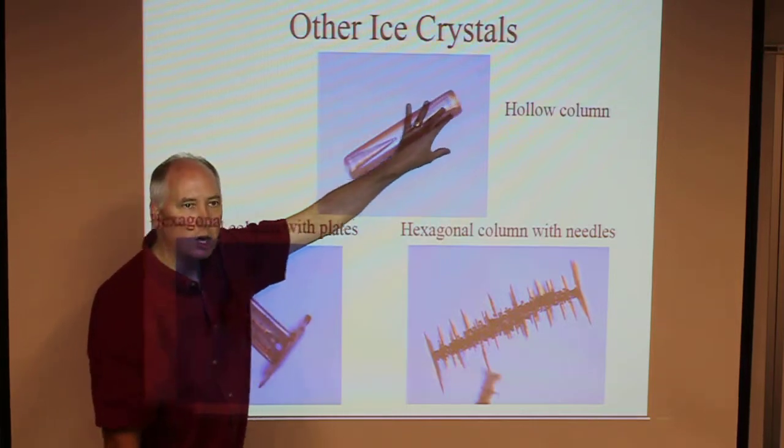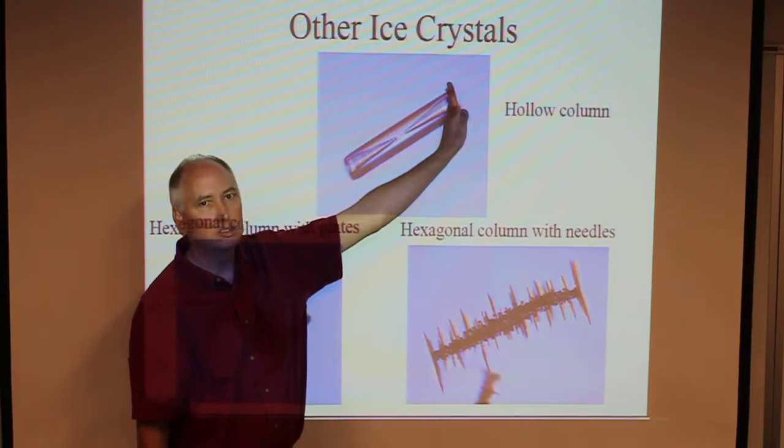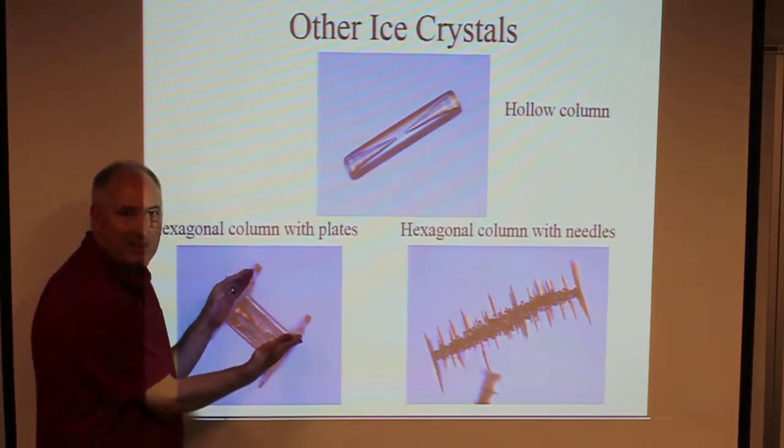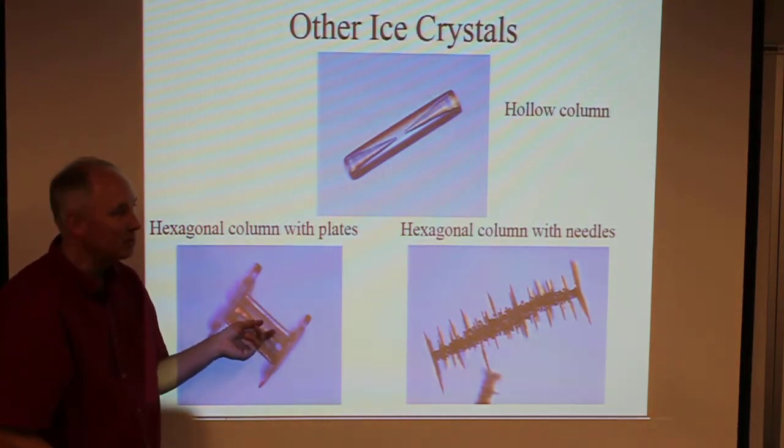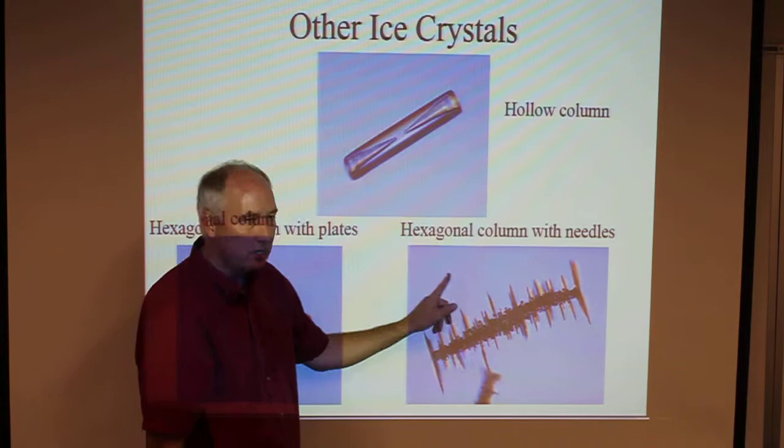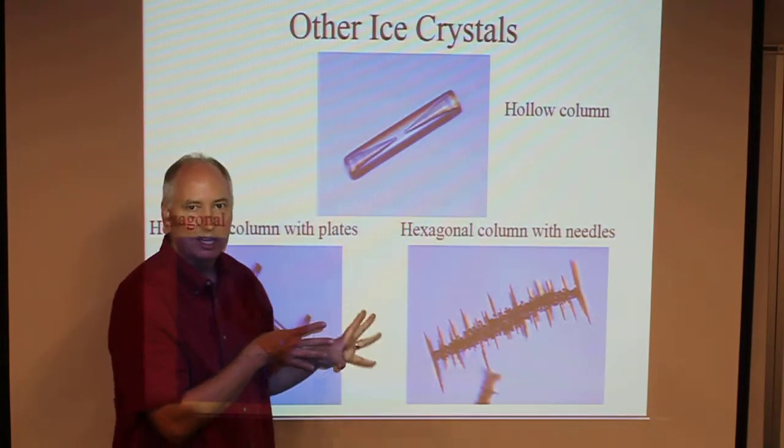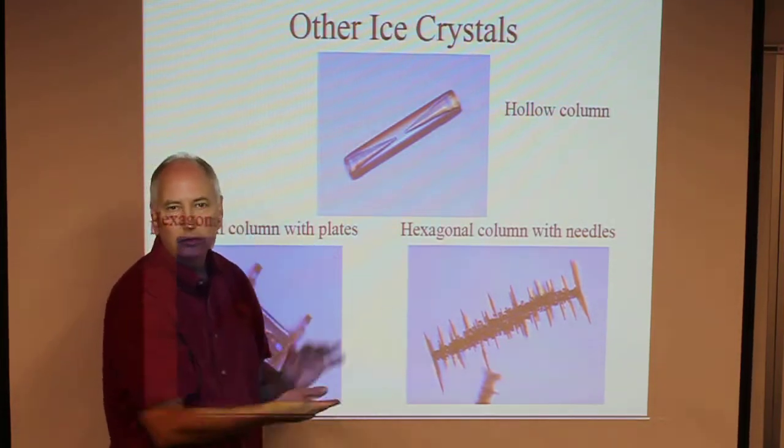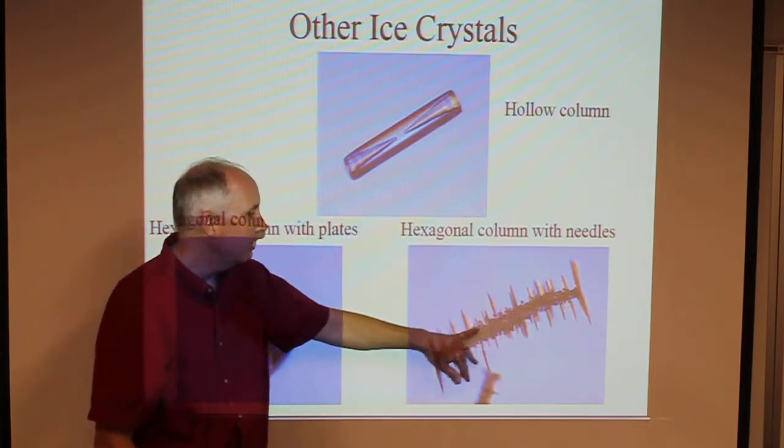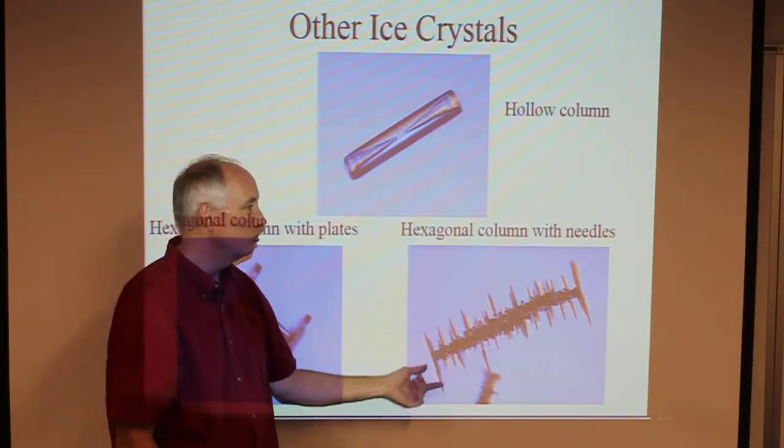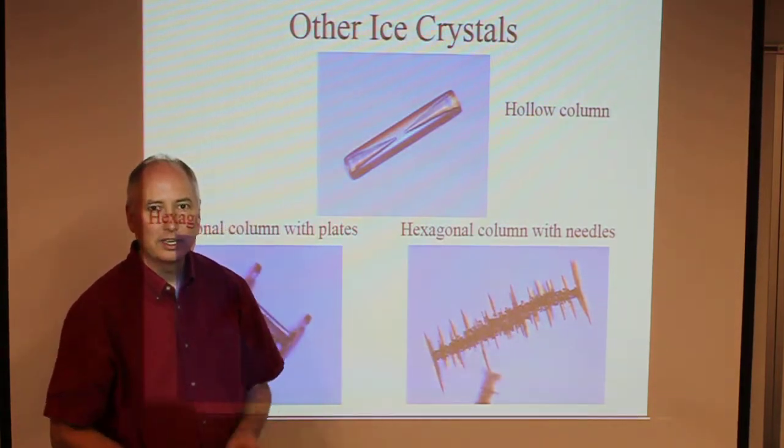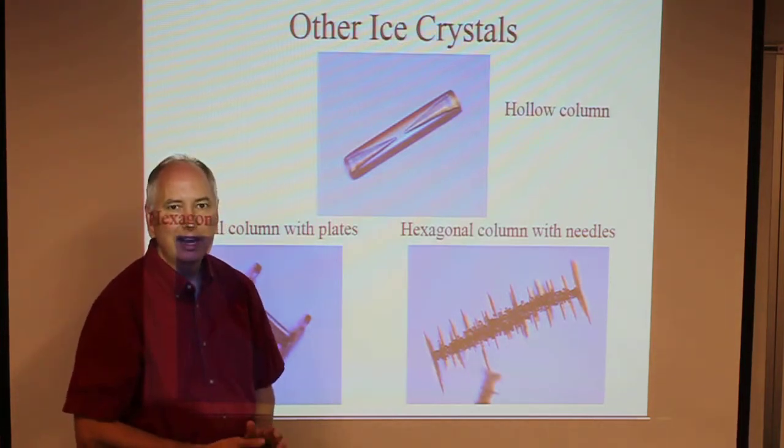Here's an example of a hollow column—basically a hexagonal plate grown along this axis, hollow in the middle. Here we have a hexagonal column with two hexagonal plates on the end. I refer to this as the TIE fighter from Star Wars. Here we have a long hexagonal column with needles growing off it. You can imagine the complexity of crystal growth in different temperature regimes. This crystal was growing when a hexagonal column would be good, then moved to a different temperature range where needles started forming on top. Each crystal preserves a history of its formation, which makes them both complex and beautiful.